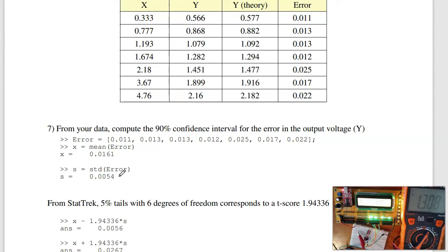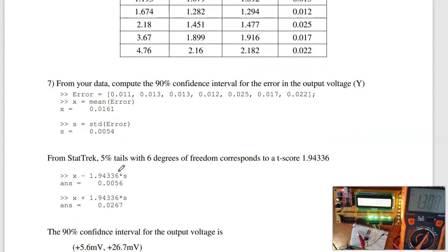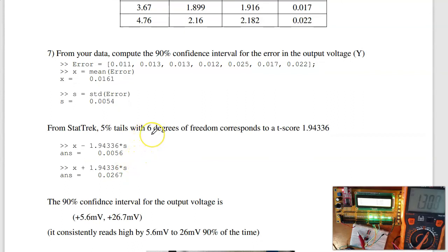I've got 3, 4, 5, 6, 7, 7 degrees of freedom. Or 7 samples, meaning 6 degrees of freedom. For my t-test, 5% tails with 6 degrees of freedom is 1.94. If I go to the mean, plus or minus 1.94 standard deviations, this says my readings should be accurate to somewhere within plus 5 to plus 26 millivolts.